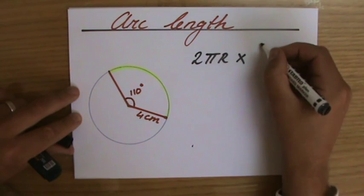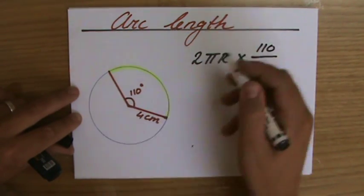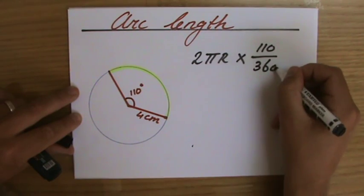Well, that is 110 degrees out of how many degrees in total? 360. That's good.